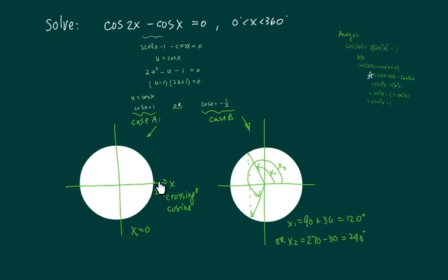So cosine of x equal to 1, that means this is 0 or 360 degrees. However, our requirement was x is less than 360 and bigger than 0. So this chunk is not a valid solution.